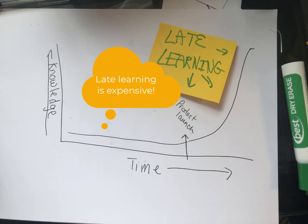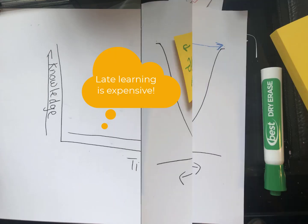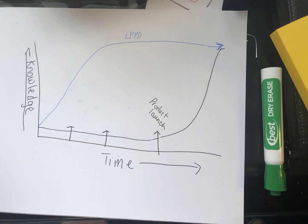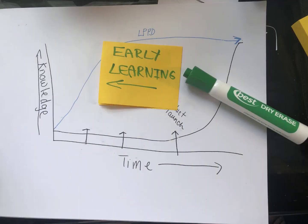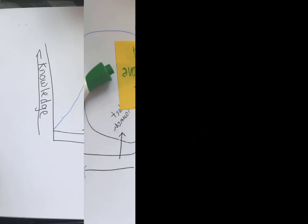That's late learning. In lean product development, we move the learning earlier in the product development process, because early learning is much more effective and much less expensive.